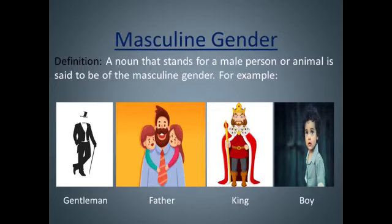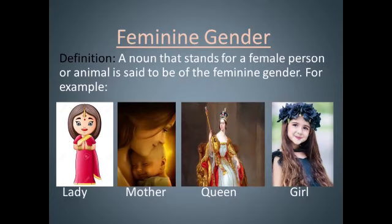Masculine gender: a noun that stands for a male person or animal is said to be of the masculine gender. For example, as you have seen in the picture: gentleman, father, king, boy. These all denote masculine gender.